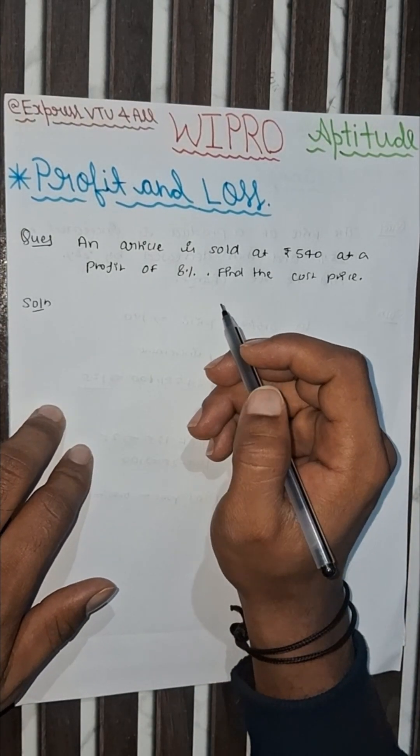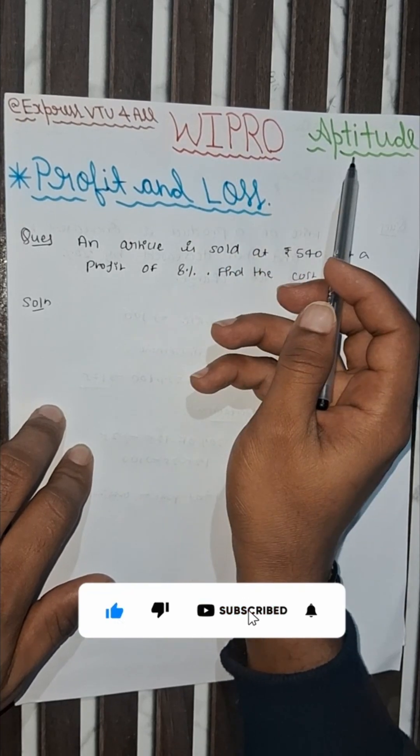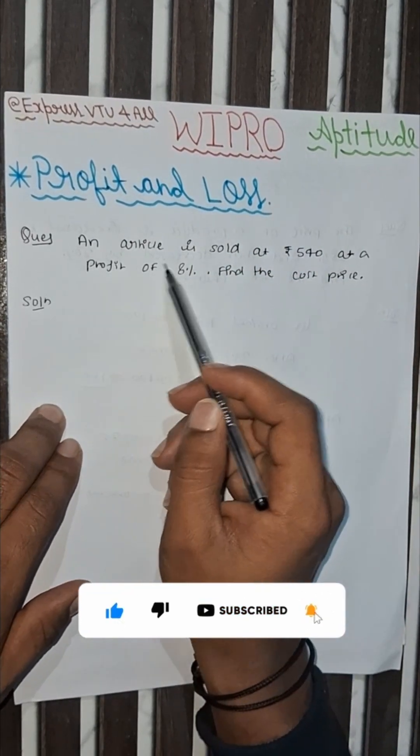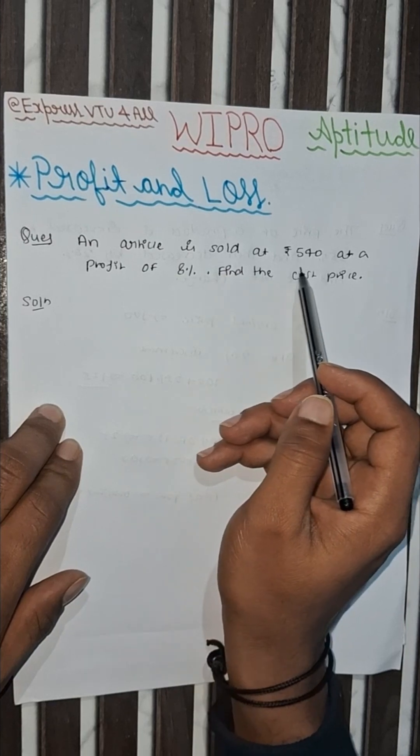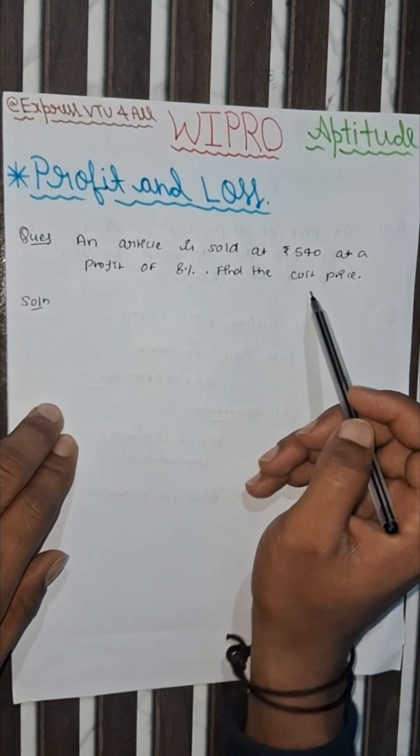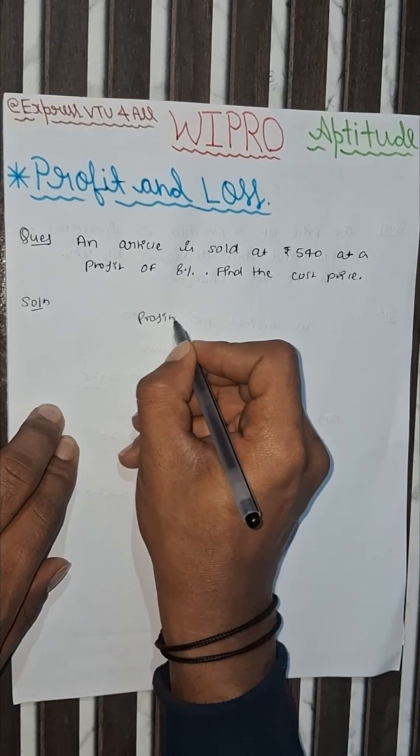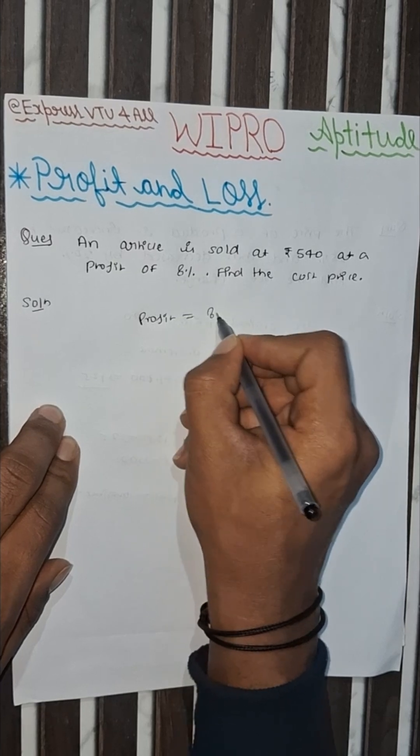This is a very common profit and loss question from Wipro Aptitude. The question is: an article is sold at rupees 540 at a profit of 8%, find the cost price. Now profit is equal to 8% of CP.